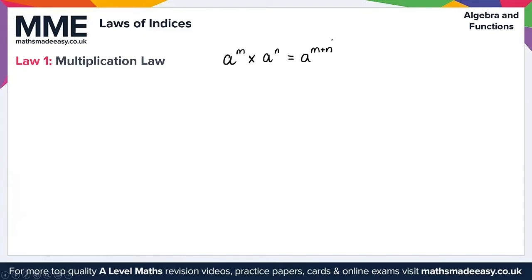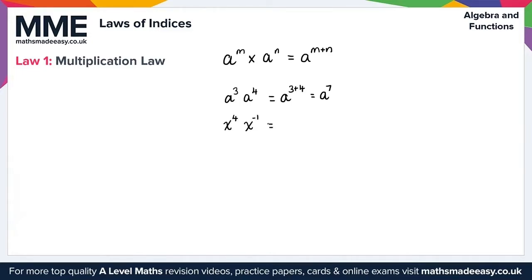Let's take a look at a few examples. If we have a cubed times by a to the 4, we simply apply this rule to give us a to the 3 plus 4, giving us a to the power of 7. We can also use this law with negative numbers — for example, x to the 4 times by x to the minus 1. Applying the law, this is x to the 4 plus minus 1, which is 4 minus 1, giving us x cubed.